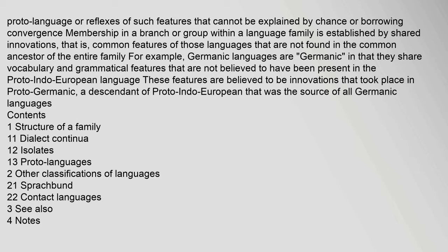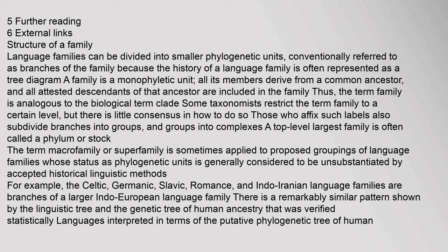Language families can be divided into smaller phylogenetic units, conventionally referred to as branches of the family, because the history of a language family is often represented as a tree diagram. A family is a monophyletic unit: all its members derive from a common ancestor, and all attested descendants of that ancestor are included in the family. Thus, the term family is analogous to the biological term clade.